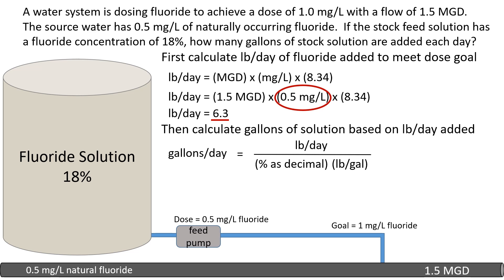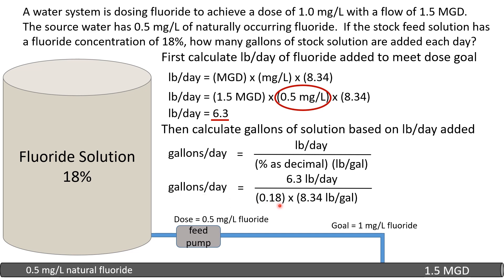This formula is very important. We take our pounds per day — 6.3 — and enter our fluoride solution concentration as a decimal: 18% becomes 0.18. We use 8.34 pounds per gallon since nothing different was specified. Crunching those numbers gives us 4.2 gallons per day. To summarize: first calculate pounds per day, then divide by percent strength and by 8.34 to get gallons per day.